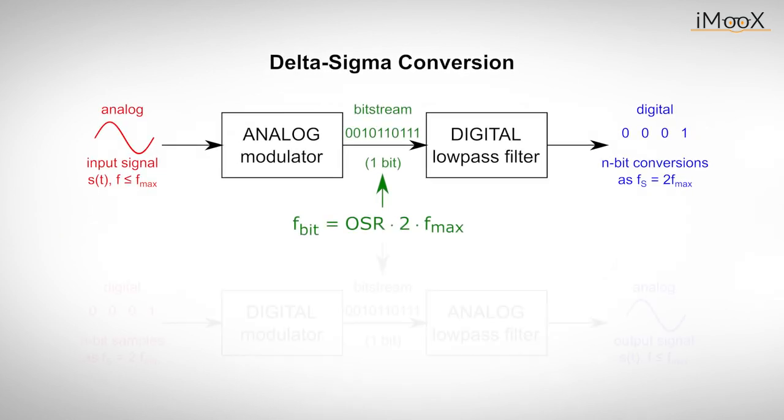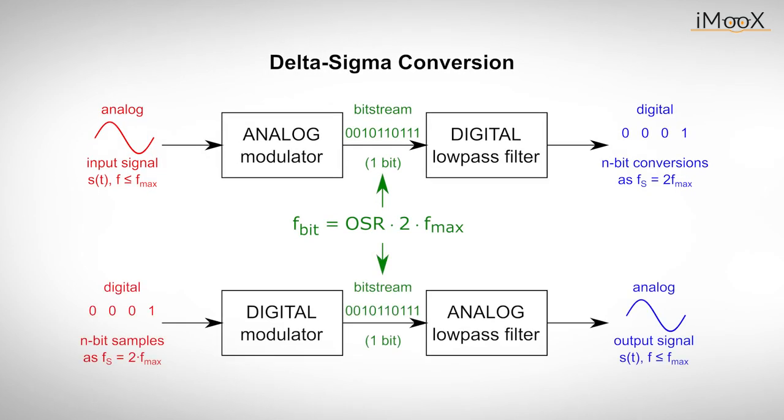The bit stream is then filtered by a digital low-pass filter. By the way, a delta-sigma digital-to-analog converter would work similarly. A modulator first oversamples the digital input signal, which originally has a sampling rate of about 2 times fmax. The intermediate bit stream is followed by an analog low-pass filter to obtain the output signal. In both cases, the bandwidth of the filter limits the incoming bit stream.